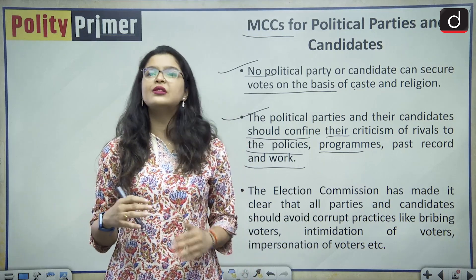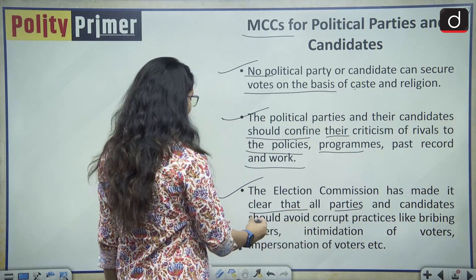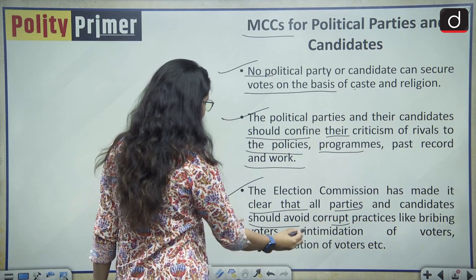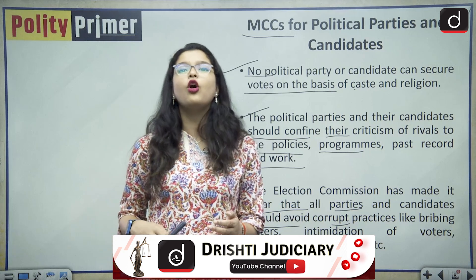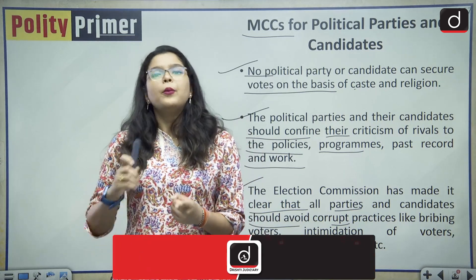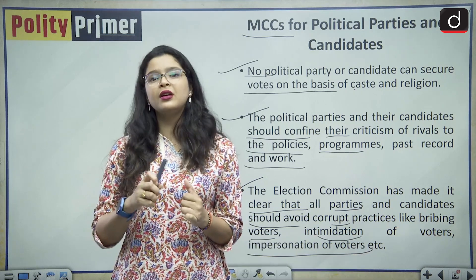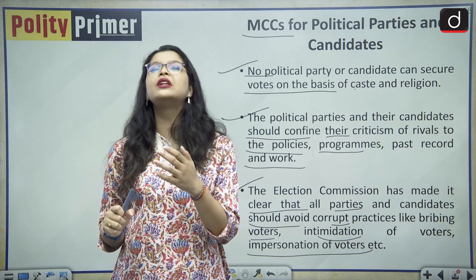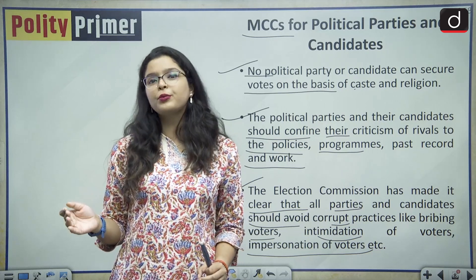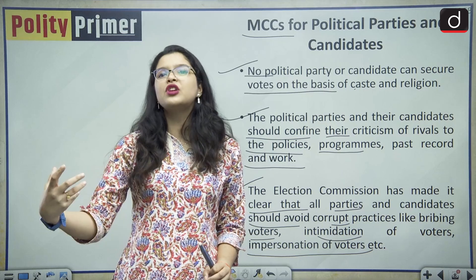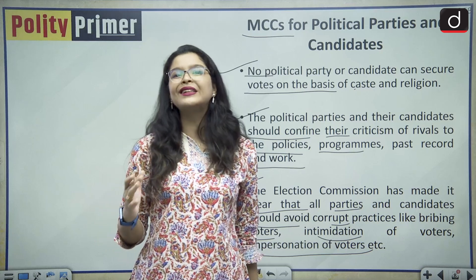The Election Commission has made it clear that all parties and candidates should avoid corrupt practices like bribing voters, intimidation of voters, and impersonation of voters. However, this is also not followed — bribery is very common, promising freebies is very common, luring voters with alcohol, promises of gold, constructing houses, or providing government jobs to family members are all very common practices in India.